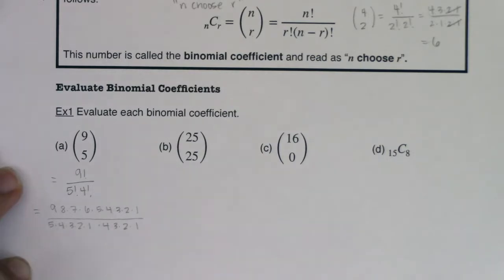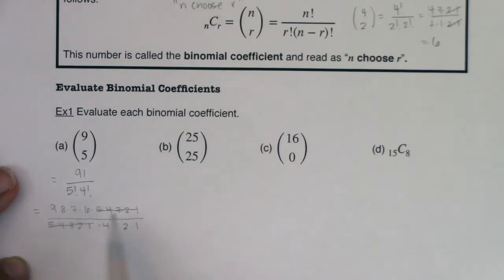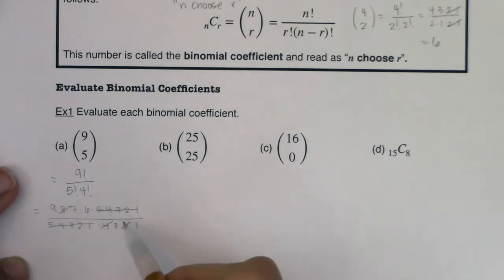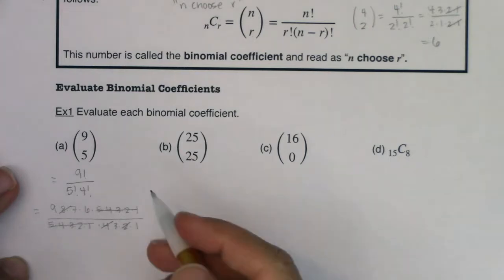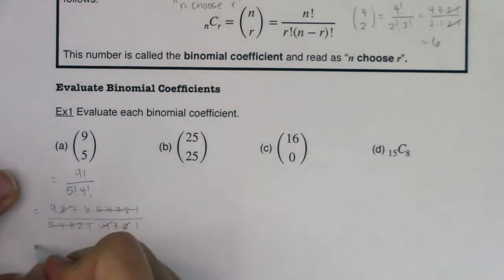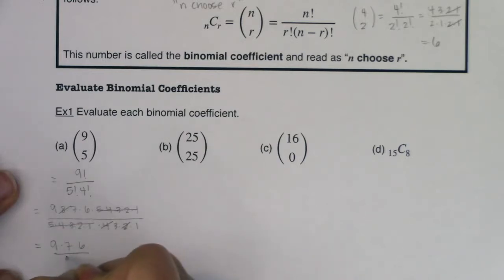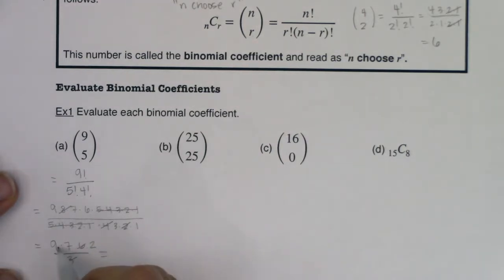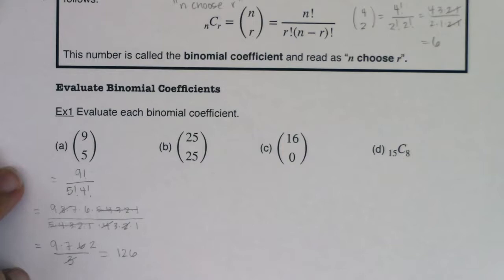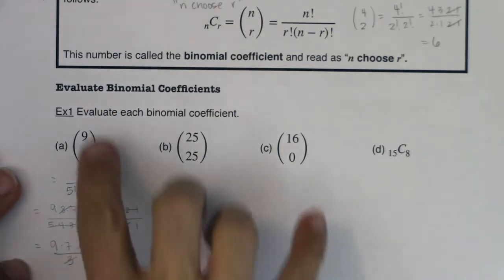Now it's a canceling game. The 5! cancels with the 5! hidden inside 9!. Looking at what remains — 9, 8, 7, 6 — the 8 cancels with the 4 and 2, and the 6 over 3 leaves a 2. So we end up with 9 × 7 × 2, which is 63 × 2 = 126. That's the binomial coefficient for nine choose five.